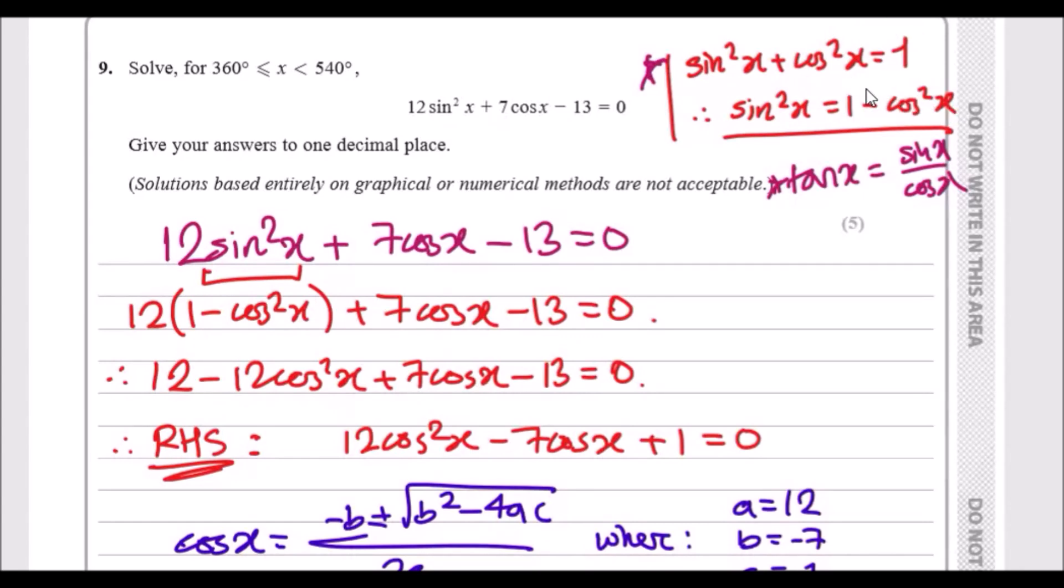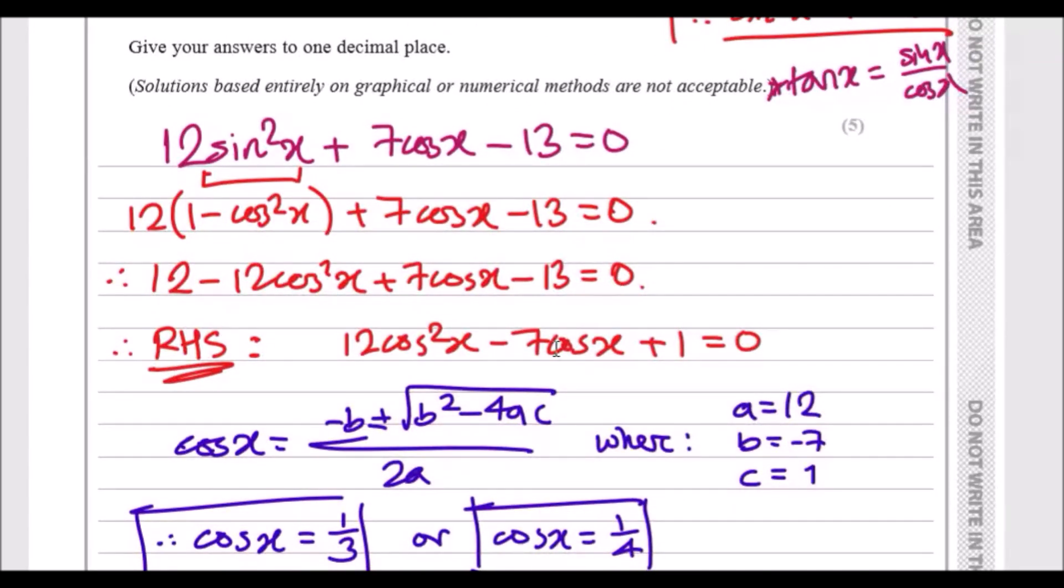Then substitute this back into this expression. This becomes that - open this up, expand it carefully so you get 12 minus 12 cos squared x and so on. Then throw everything to the right hand side. This is just for convenience because I like to make my square terms positive.